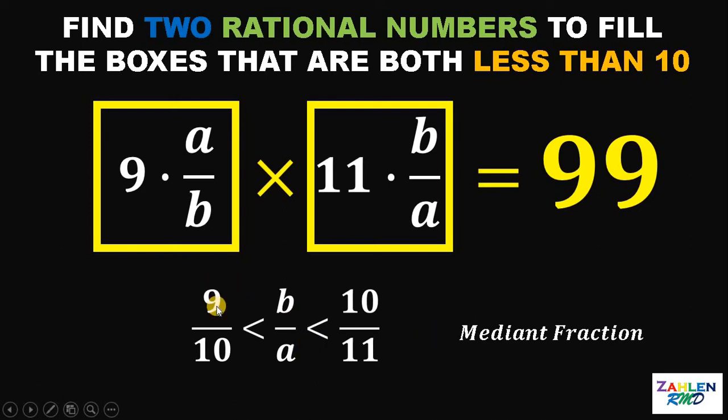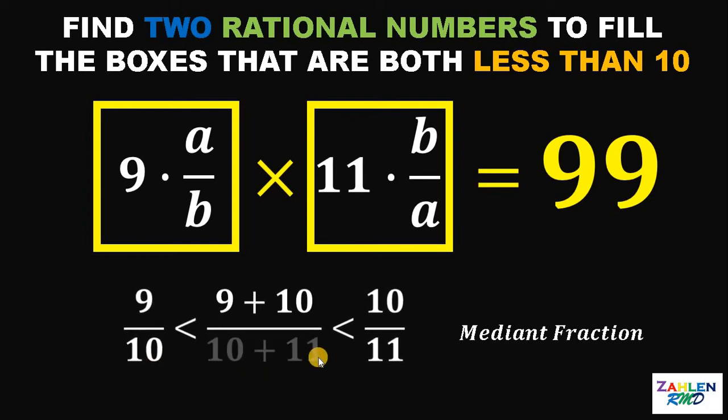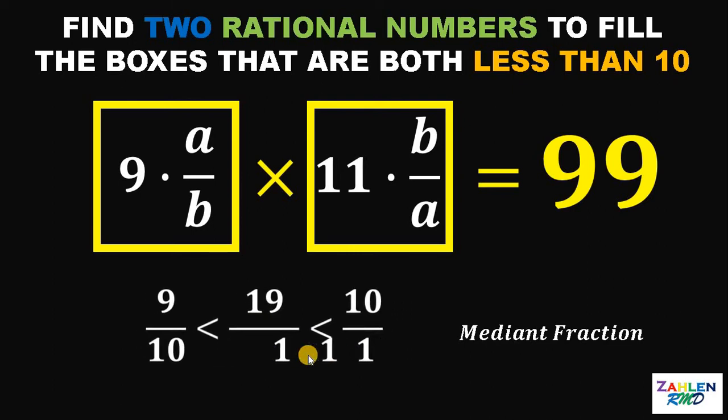This is easy and simple to do. What we're going to do is add the numerators 9 and 10. So this will give us 9 plus 10 as B. And this A is just 10 plus 11. Now, 9 plus 10 is 19, and 10 plus 11 is 21.